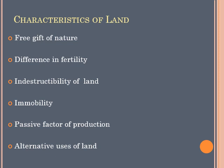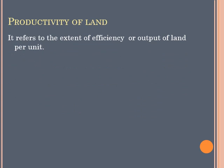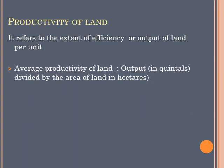Next we are going to look at productivity of land. Productivity of land means the extent of efficiency or output of land per unit — basically, how able the land is to support life and produce. This is expressed in two ways. Number one is average productivity of land, which means output divided by the area of land. Whatever produce is obtained from the land is divided by the total area of that land.